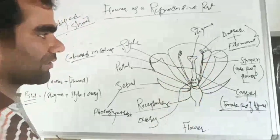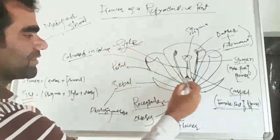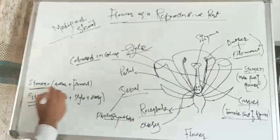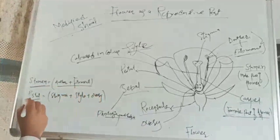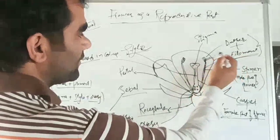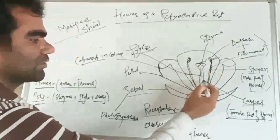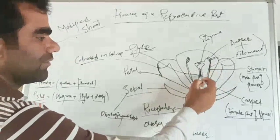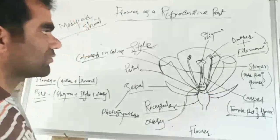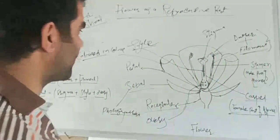This is the female reproductive part of the flower. The upper part is the stigma, and this is the style, and this is the ovary of the flower. The pistil consists of stigma, style, and ovary. The pollen grains fall on the stigma and move towards the ovary through the style. Fertilization then occurs. So this whole structure is the female reproductive part and this is the male reproductive part of the flower.